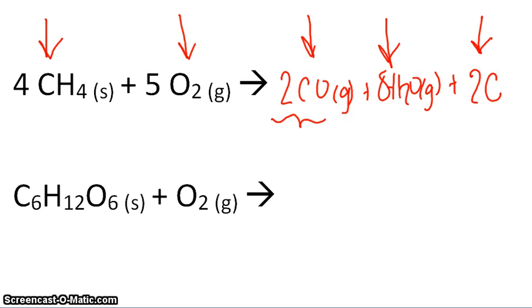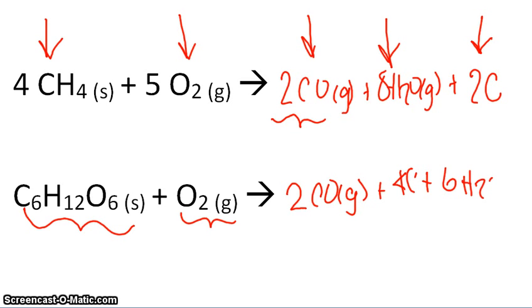Let's look at the second example. Again, I have an organic compound with a lack of oxygen. So I know I'm going to create 2 CO, 4 C, and 6 H2O.